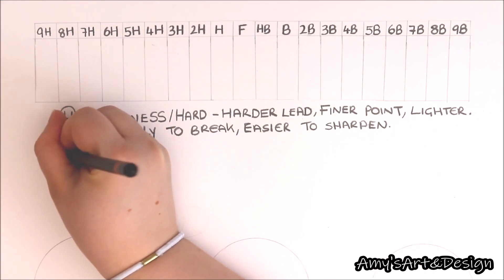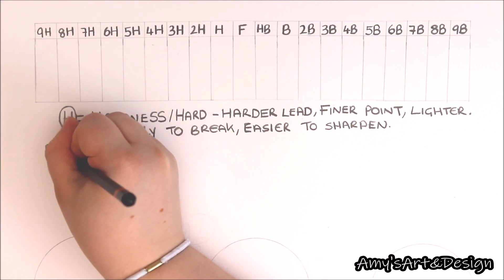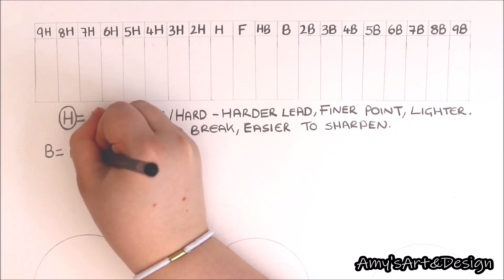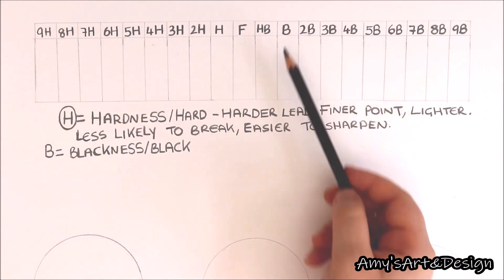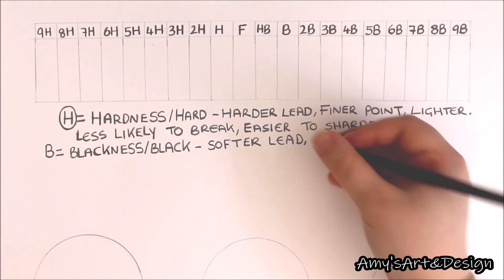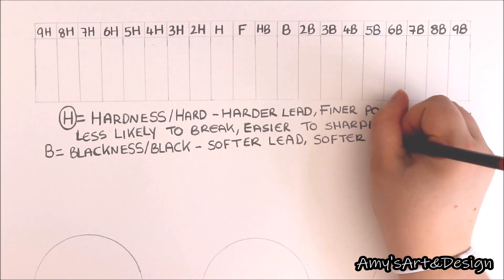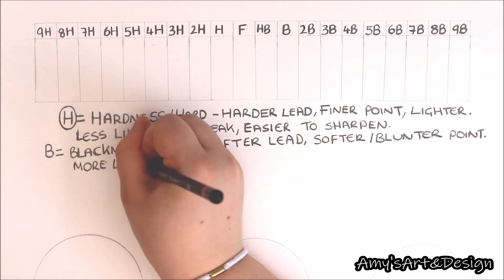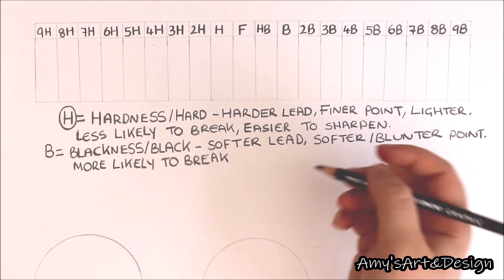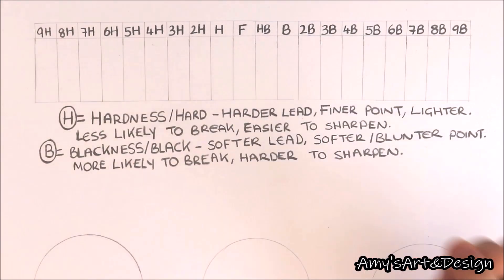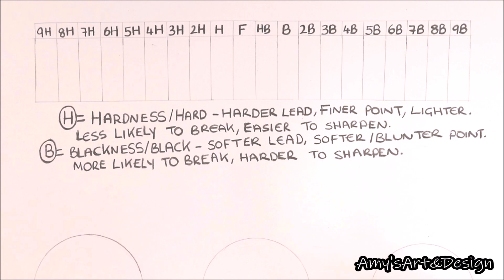That is what the H stands for on graphite pencils. The letter B stands for blackness or black, meaning these pencils produce a much darker shade than H pencils — they are effectively the complete opposite. B pencils have a much softer and blunter point, are more likely to break because the lead is weaker, and are more difficult to sharpen and retain a sharp point.